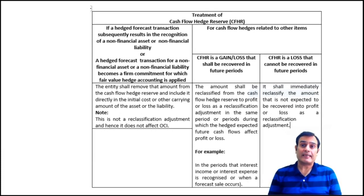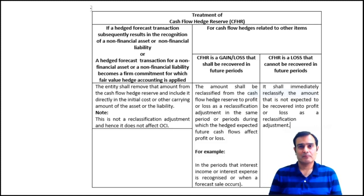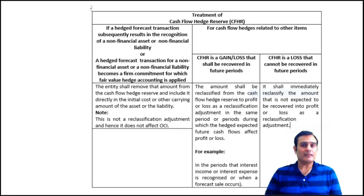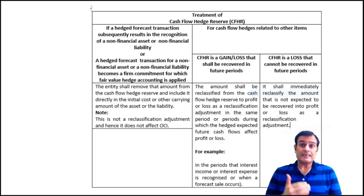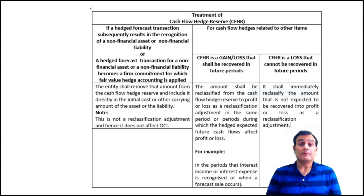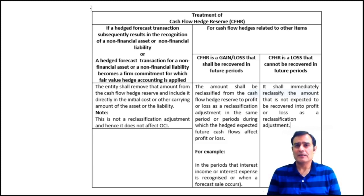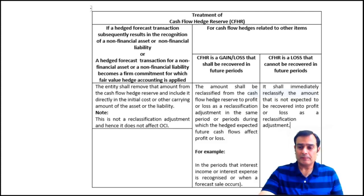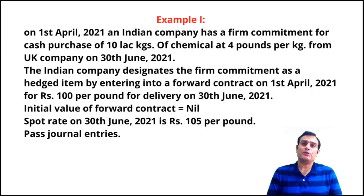The question arises: what do we do with this cash flow hedge reserve? IND AS 109 gives some guidance on this. Without an illustration it would be difficult to elaborate all these concepts. Considering I'm just introducing the concept of hedge accounting, I have taken an illustration only out of the first box of this particular chart. It says: if a hedged forecast transaction subsequently results in the recognition of a non-financial asset or liability, or a hedged forecast transaction for a non-financial asset or liability becomes a firm commitment for which fair value hedge accounting is applied. Let me take a very simple example to explain the nitty-gritties related to a cash flow hedge.